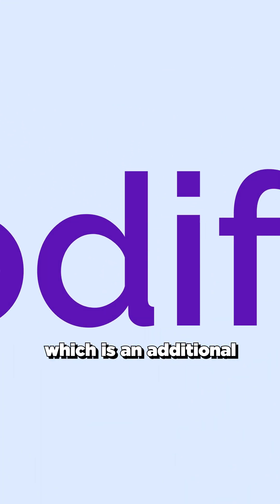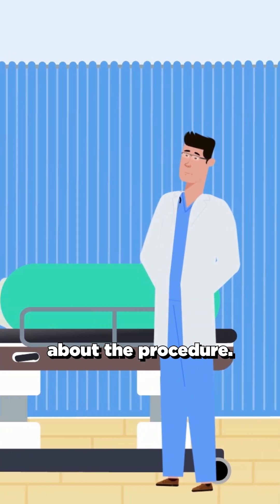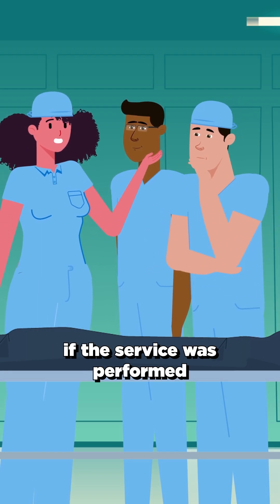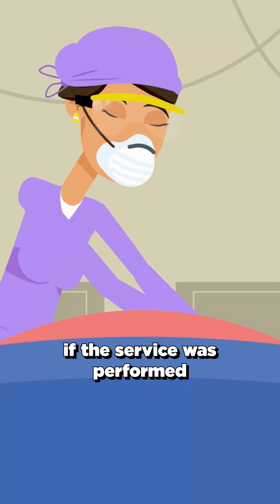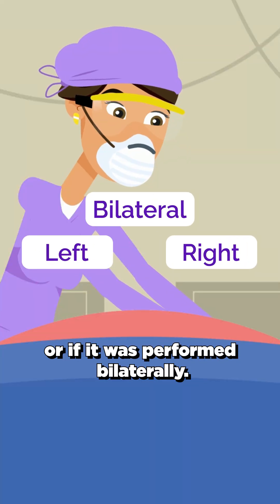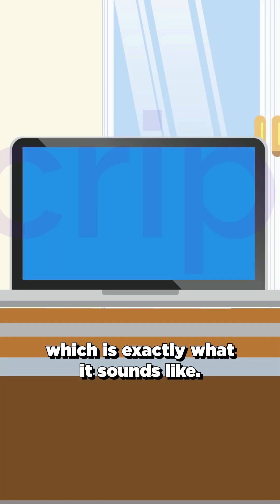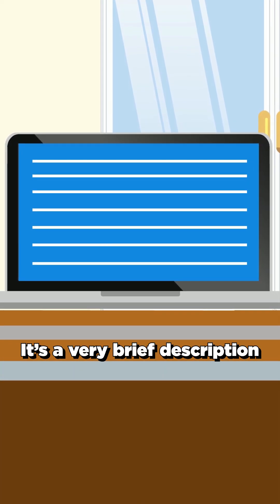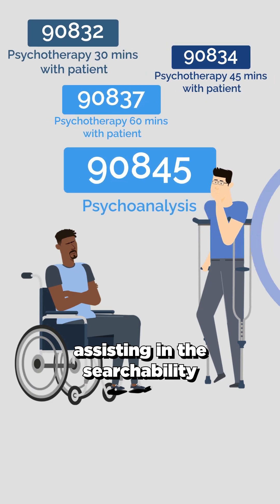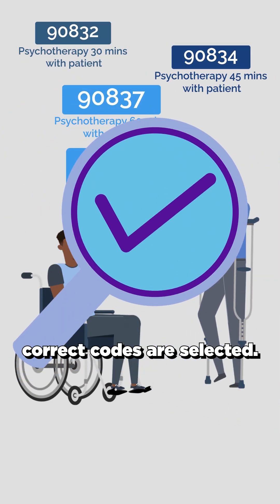Next is the modifier, which is an additional one or two digits that provide more information about the procedure. For example, the modifier will tell you if the service was performed on the left side of the patient, the right side, or if it was performed bilaterally. Last is the description, which is exactly what it sounds like — it's a very brief description of what the procedure is, assisting in the searchability of CPT codes and ensuring the correct codes are selected.